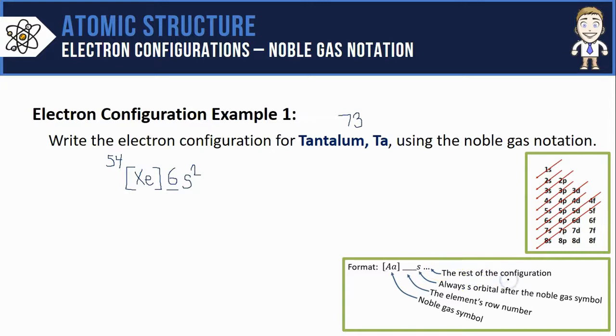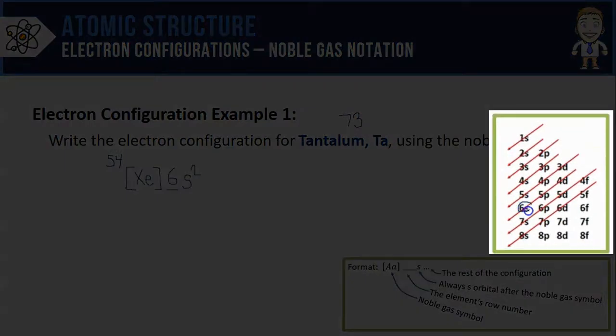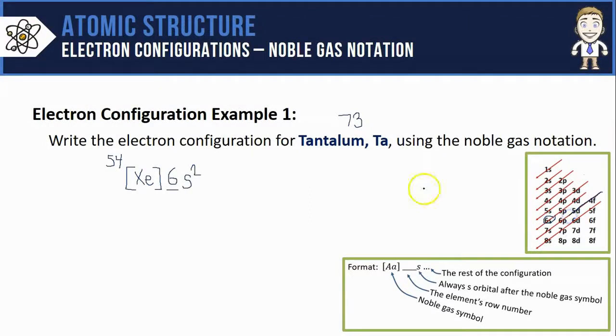You just have to fill out the rest of the configuration using your diagonal rule. After the six s orbitals are filled, I can see the next ones I go to are the four f's followed by the five d's. I can fill those out right away.